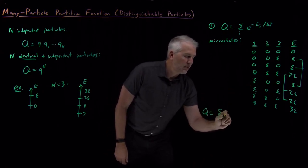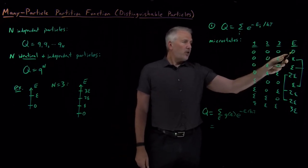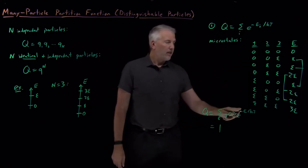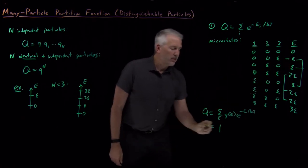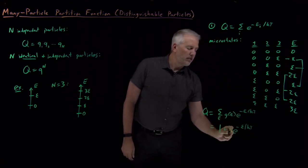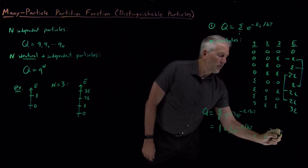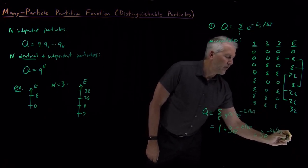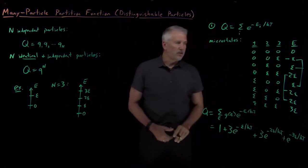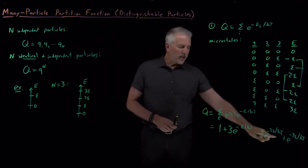Writing that out: the energy zero term has degeneracy one, giving e to the zero equals one. The energy epsilon term has degeneracy three, giving three times e to the minus epsilon over kT. The energy two epsilon term also has degeneracy three, and the energy three epsilon term has degeneracy one. So that's the partition function for the system — if we write out all the microstates, collect them by energy level to find the degeneracies, and use those to write the partition function, we get this result.